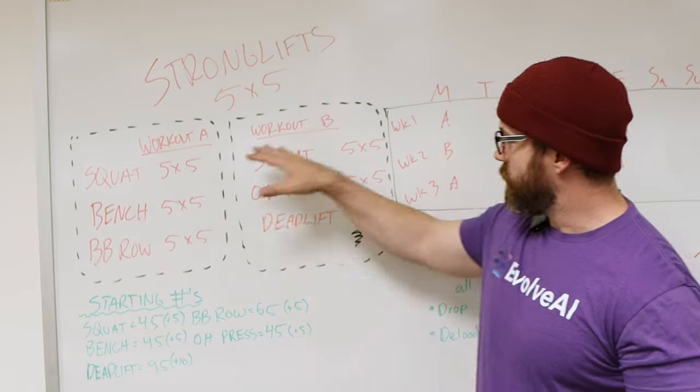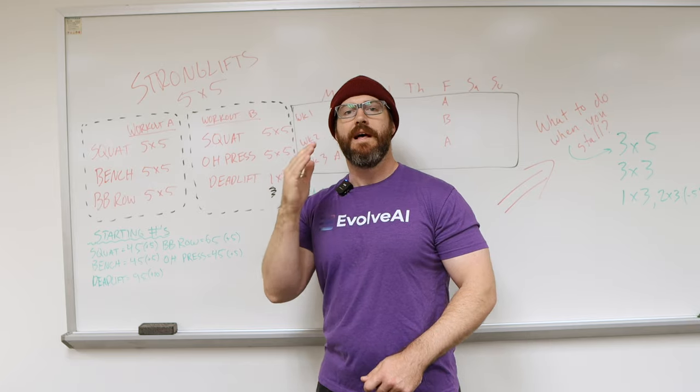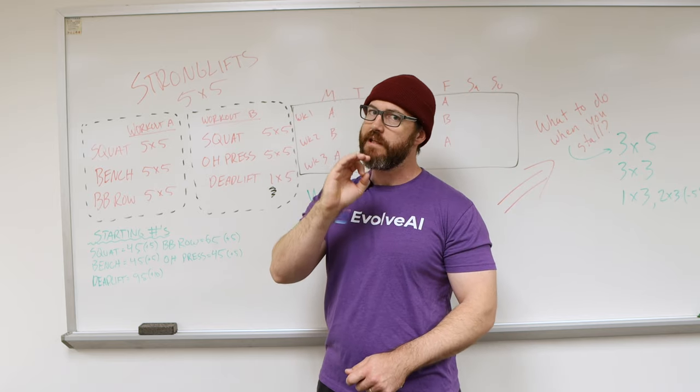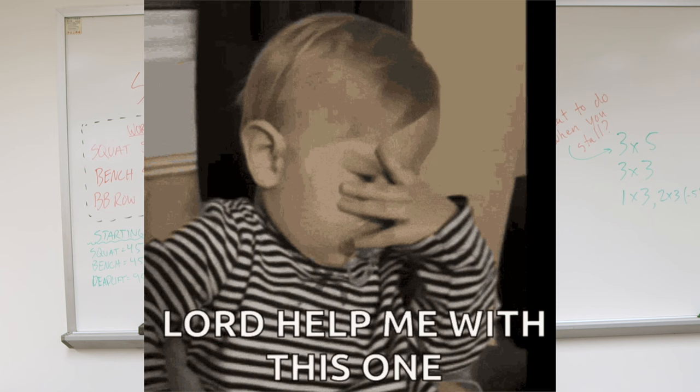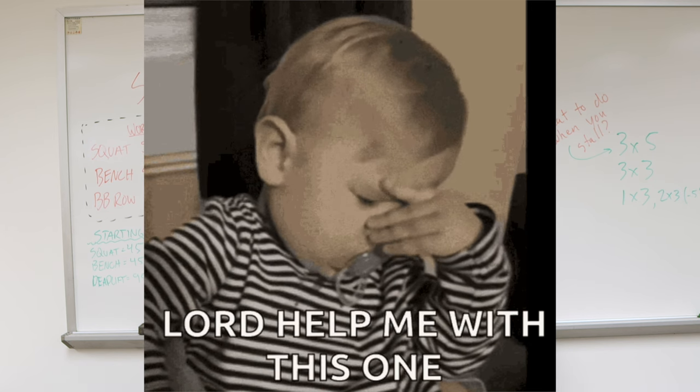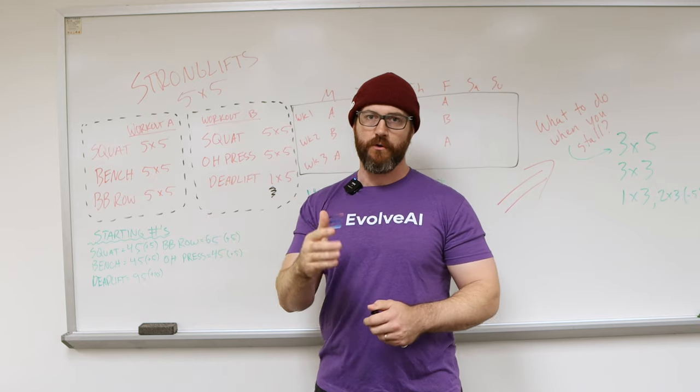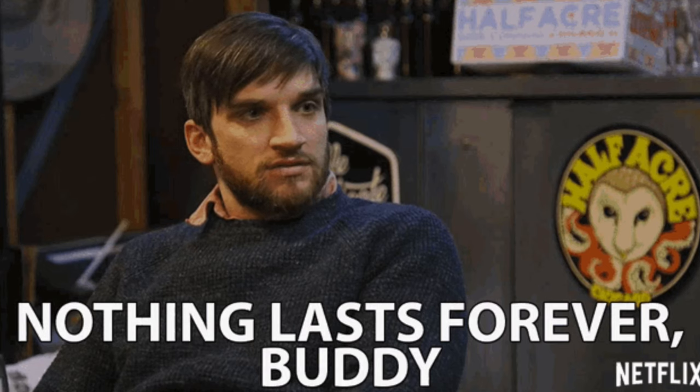And every time you're exposed to one of these lifts, you're going to do more than you did the last time. That's called a linear progression. That's different than linear periodization. Linear periodization has a lot more going on. It just means that you're scaling your whole structure in a linear way. Linear progression means you're actually adding weight to the bar every time you're exposed to that lift. So, you can't do that forever. It's not meant to be forever.